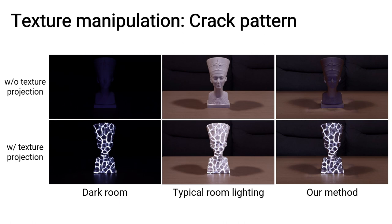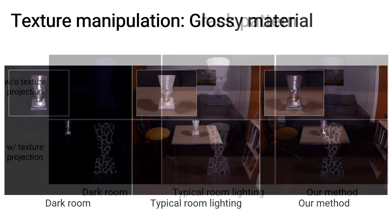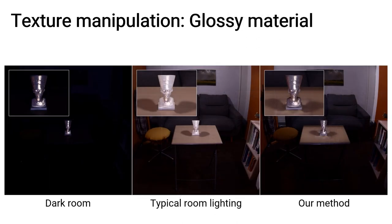Before texture projection, we demonstrate that our method can selectively remove environmental light from the target object, while typical lighting significantly increases the brightness of the target. The projection mapping results demonstrate that our method can manipulate the target's appearance under environmental lighting, while minimizing the intensity elevation in dark areas of the projected texture compared to typical lighting. We also altered the surface material of the target object to a mirror-like glossy material using projection mapping under the same three lighting conditions. The projection mapping result in the proposed method exhibits higher contrast than the typical lighting condition, and the surrounding environment remains visible. As a result, the projected bus statue can be perceived as having a glossy material to the greatest extent under the proposed condition.